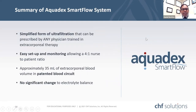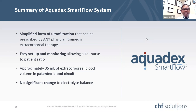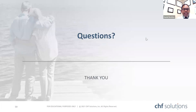In summary, this simplified form of ultrafiltration can be prescribed by any physician trained in extracorporeal therapy. Easy setup and monitoring allows for a four-to-one nurse-to-patient ratio. Approximately 35 cc's of extracorporeal blood volume is in the patented blood circuit at any one time, with no significant change in electrolyte balance, especially magnesium and potassium, requiring replacement during the session. Thank you very much for your time, and I look forward to seeing you in Houston this year.